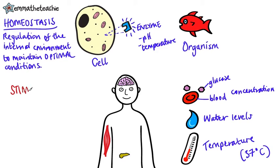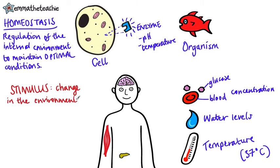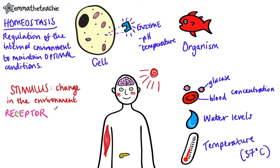A stimulus is a trigger for the homeostatic processes in the body, and it's just a change in the environment. An example of this could be on a hot day, the temperature rises and your body feels hot. You need to detect that change, and receptor cells are what do that detecting.